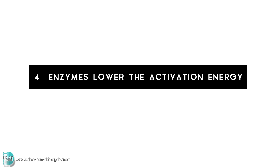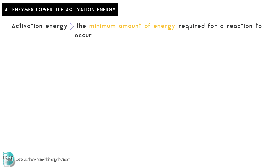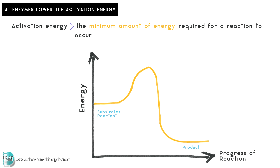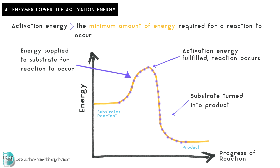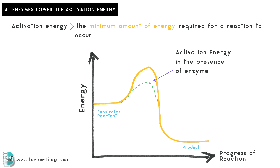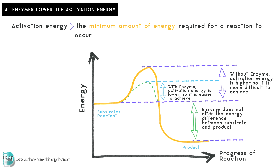Number 4, enzymes lower the activation energy. Activation energy is the minimum amount of energy required for a reaction to occur. For example, heat energy is usually needed to increase the kinetic energy of substrate molecules. With sufficient kinetic energy, the molecules will collide and turn into the products. Enzymes can lower the activation energy required to quick-start a reaction. When less energy is needed, the reaction can occur more easily and more quickly. Bear in mind that the overall change of energy is not altered, as the energy content of substrate and product are not affected.